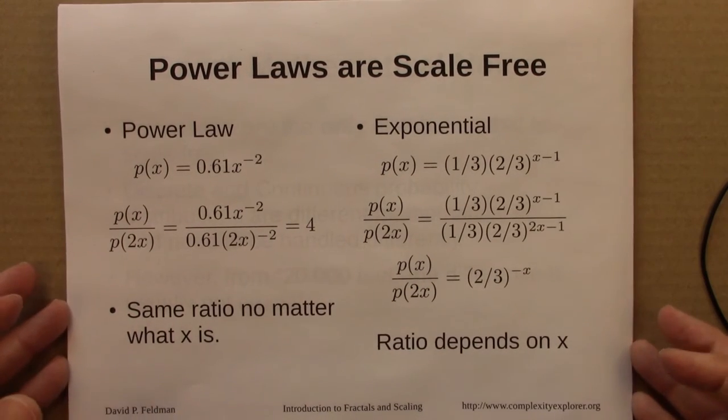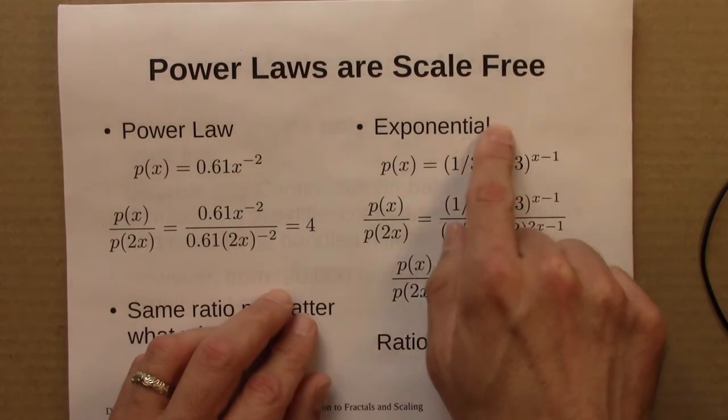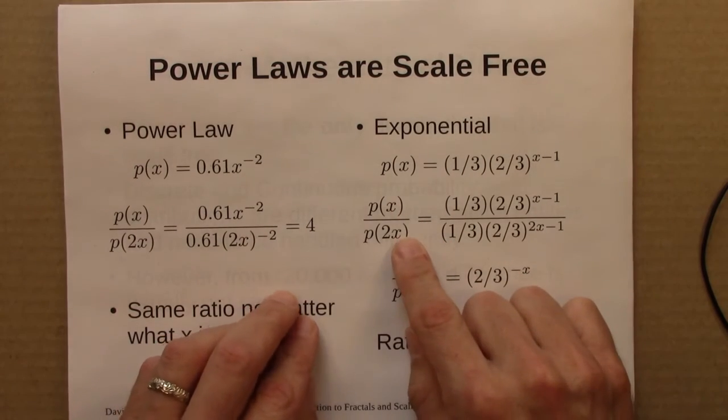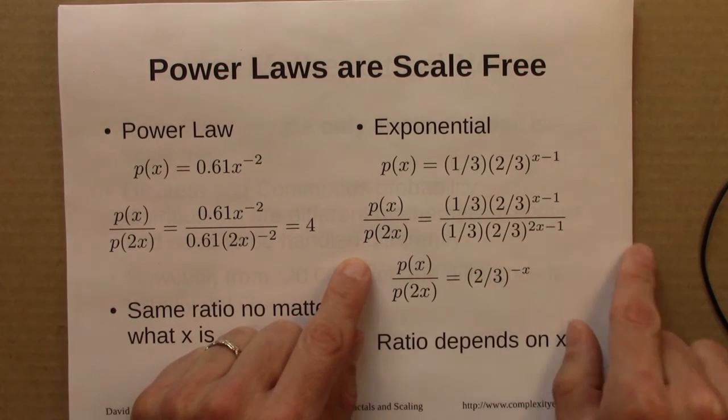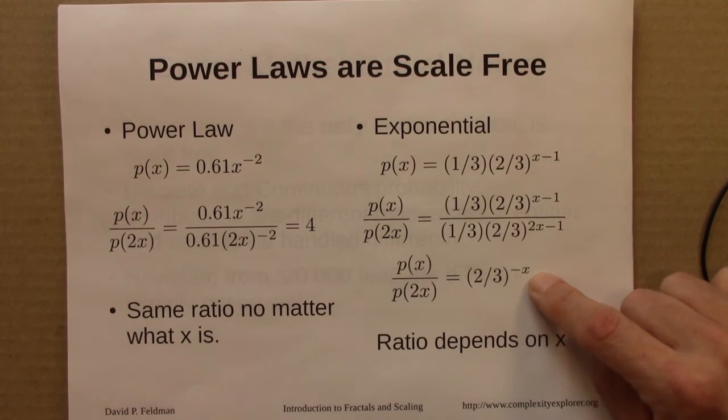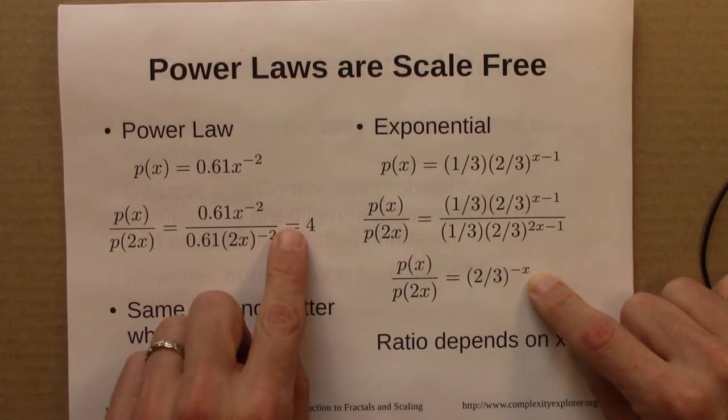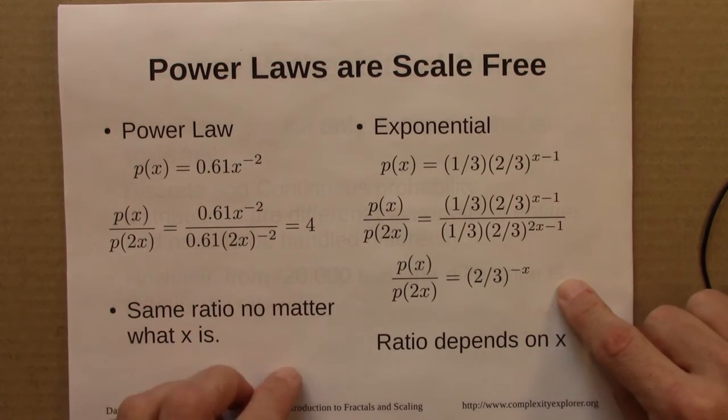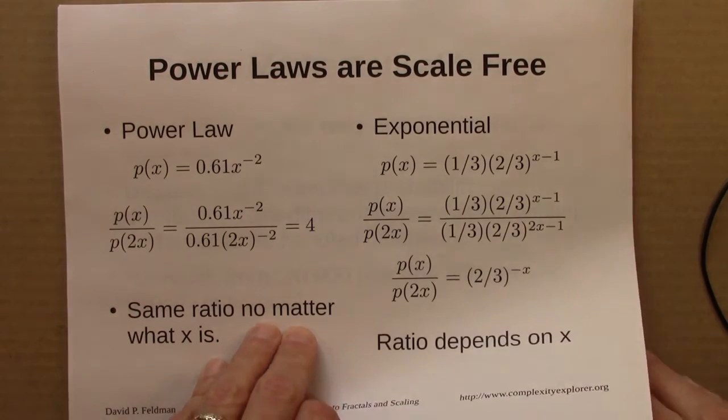For the exponential distribution, the story is different. If I have something described by this distribution, and I again want to know, how much more likely is something of size x than size 2x? If I do the math out, I get this answer. And the key thing to note is that it depends on x. So this ratio is not scale-free, independent of x, independent of scale. It depends on the scale. So that's another way of seeing that exponential functions are not scale-free.